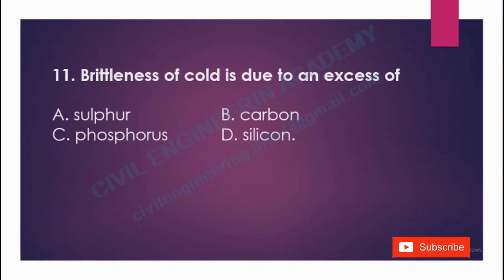Brittleness of coal is due to an excess of: A) sulfur, B) carbon, C) phosphorus, D) silicon. The answer is C, phosphorus.